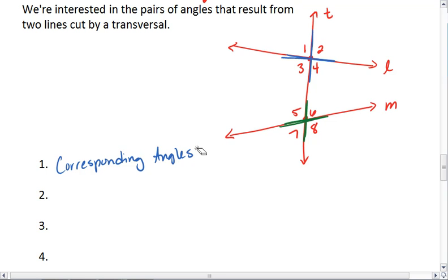So an example of corresponding angles would be angle two and angle six. Can you spot another pair of corresponding angles? Another pair would be angle one and angle five, since both angles are the upper left of their cross.